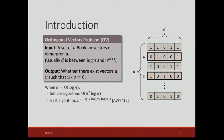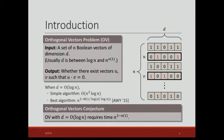When D is logarithmic of n, there's a simple algorithm that runs in n squared times log n, and the best algorithm by Williams and others runs in a slightly improved amount of time. The orthogonal vectors conjecture says this problem with D equals logarithmic of n requires time n to the two minus little-o of one.